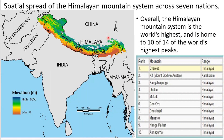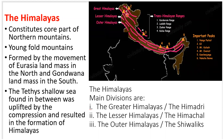Everest is the highest peak in the Himalayas and the highest peak of the world, which is located in Nepal, not in India. In the Karakoram range, we have a mountain peak called K2, also known as Godwin-Austen, which serves as the highest peak of India. This is Mount K2 in the Karakoram range — the highest peak of India.